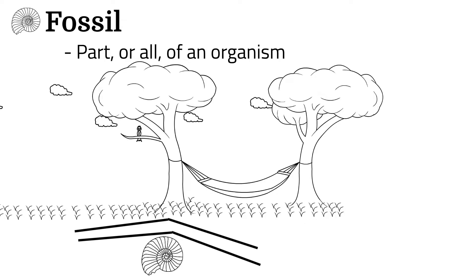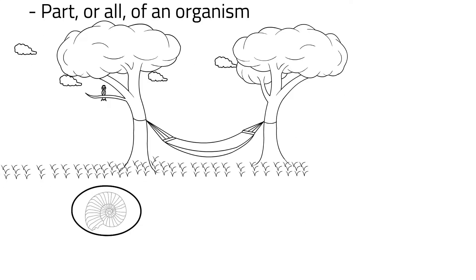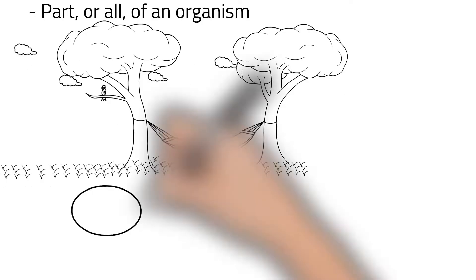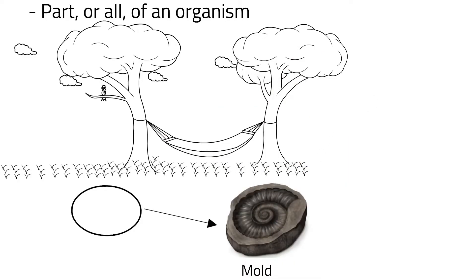Remember sedimentary rock and how it's formed? The skeleton of the organism dissolves and leaves a hole, or a mold, in the rock in the shape of the skeleton. Other sediment could then filter in and fill the mold, harden, and form a cast of the skeleton that was there before.